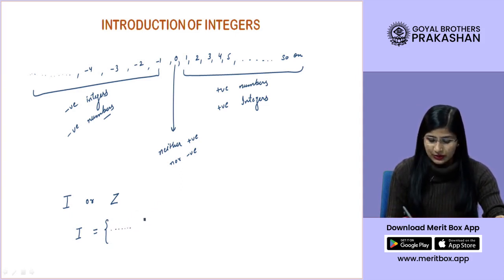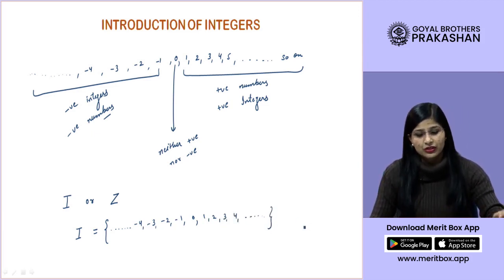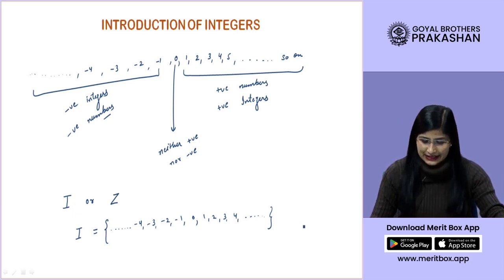You would write, you will show the dots because the counting keeps on going minus 4, minus 3, minus 2, minus 1 and then 0, 1, 2, 3, 4 and so on. This is how you show it in the form of a set.